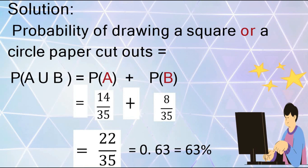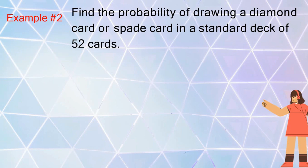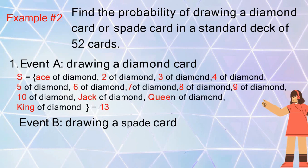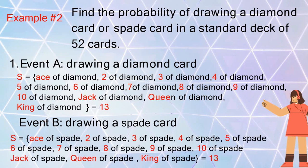Another example: find the probability of drawing a diamond card or a spade card in a standard deck of 52 cards. For event A, drawing a diamond card, the sample space includes ace through king of diamonds — a total of 13 outcomes. For event B, drawing a spade card, the sample space is ace through king of spades — also 13 outcomes.